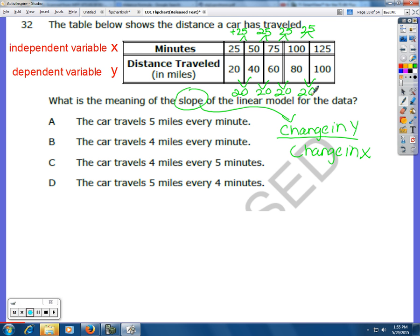So that means that the car travels 20 miles every 25 minutes. So 20 miles change in Y, the distance, over 25 minutes. This simplifies to 4 over 5. So it's traveling 4 miles every 5 minutes. And you can see that answer there C.